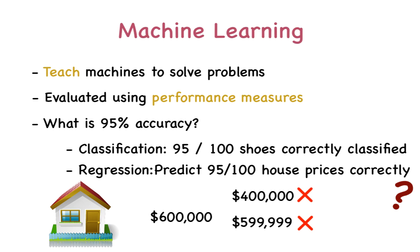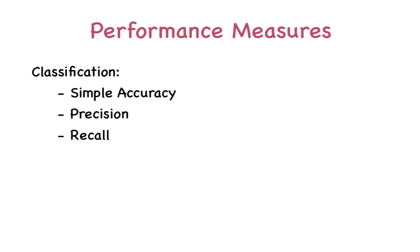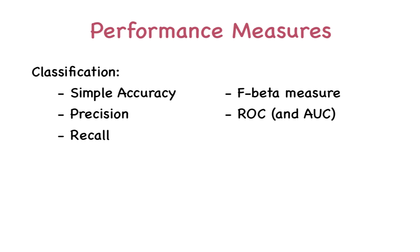We'll split the types of performance measures depending on the type of machine learning problem. For a classification problem, we can discuss simple accuracy, precision, recall, and the F-beta measure. This is what we're going to cover in this video. There are also some graphical methods for determining the performance of classification problems, such as receiver operating characteristic curves, or ROC curves.